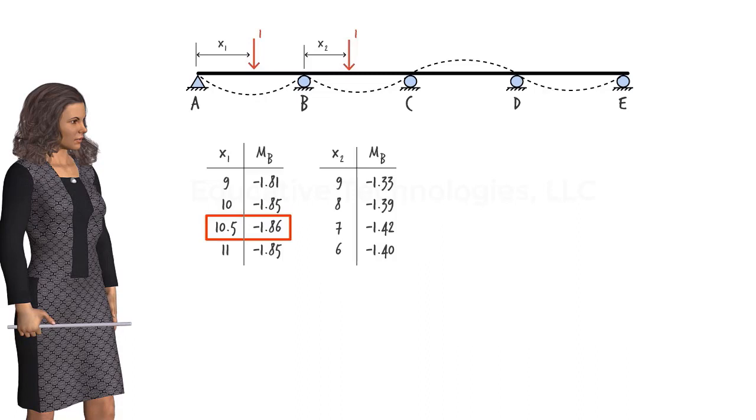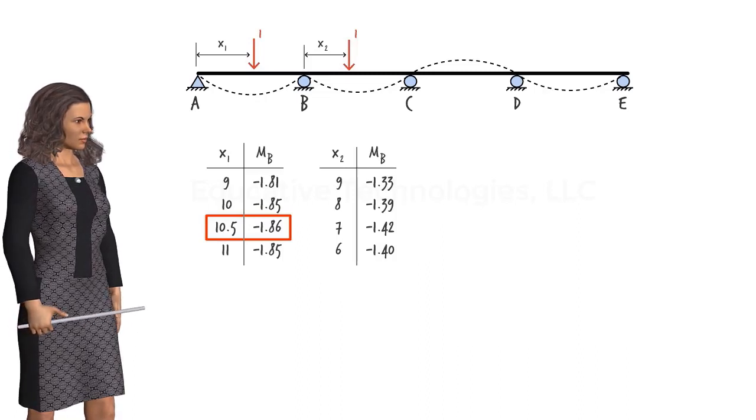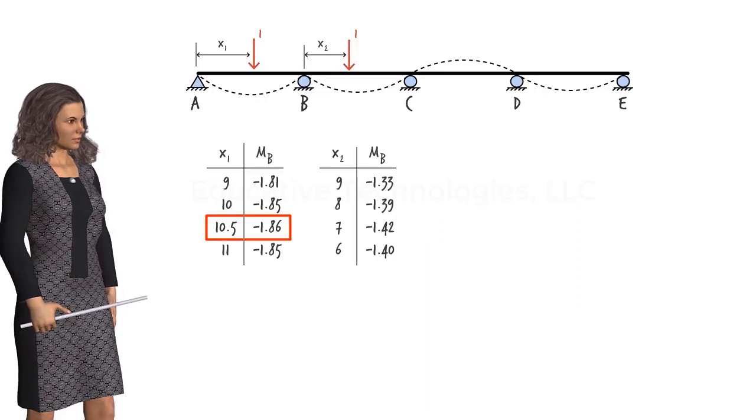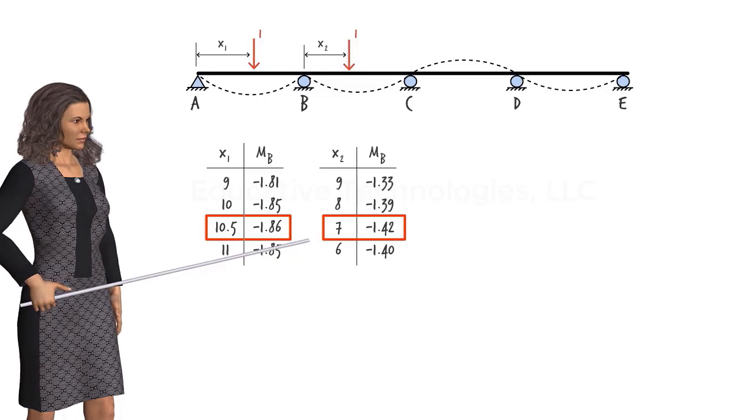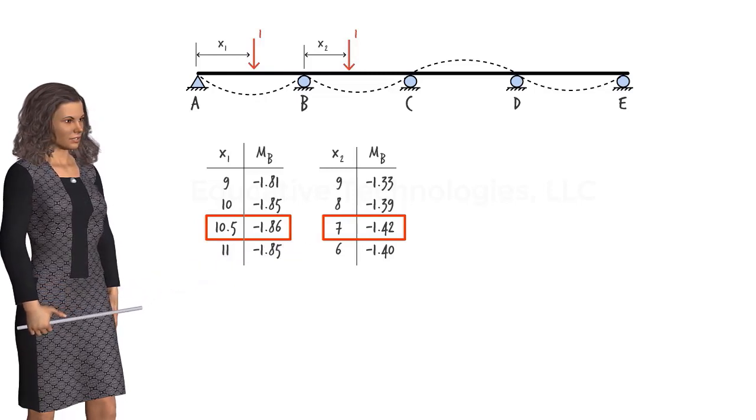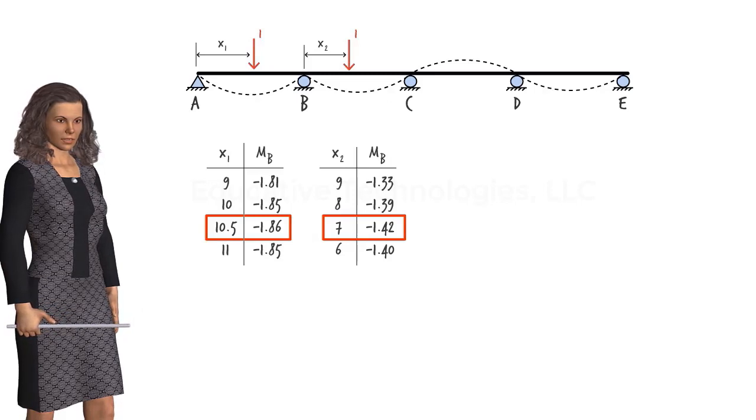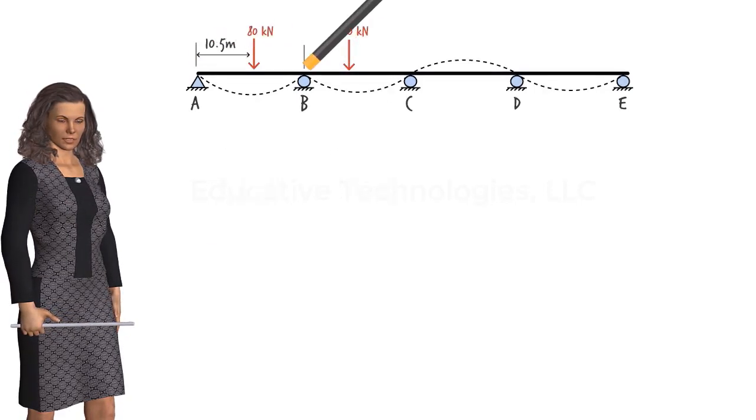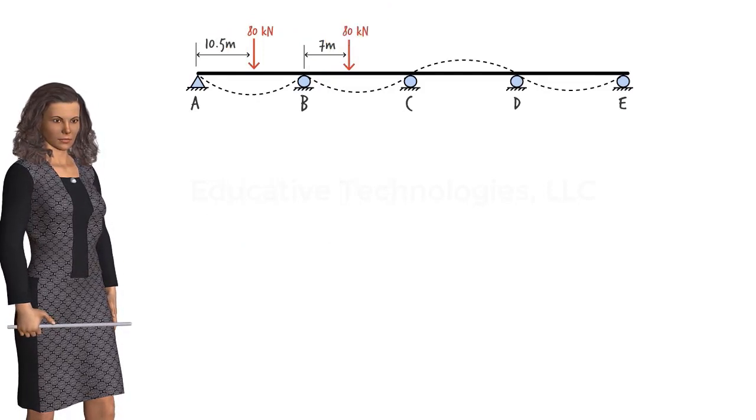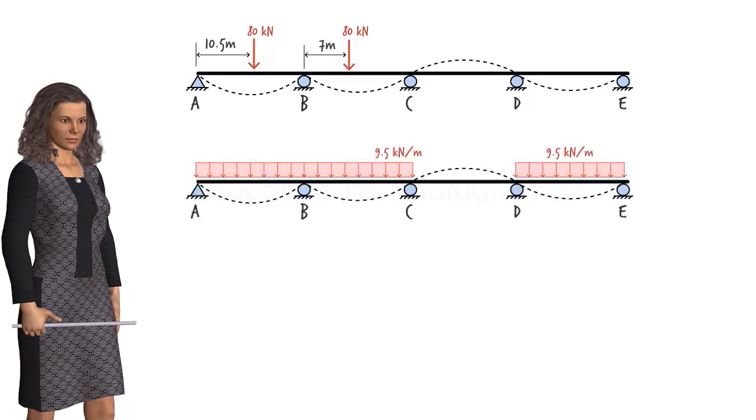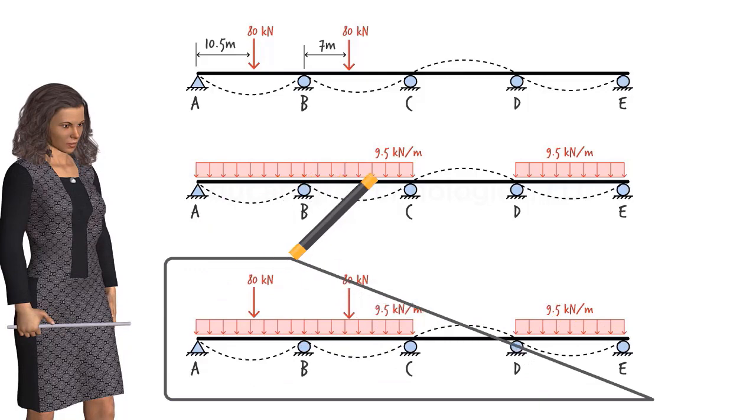The tabulated data suggests that the maximum negative moment at B occurs when x is between 6 and 8. Although we can continue the search in order to pinpoint the location of the maximum moment with a higher accuracy, for our illustrative purposes, I say this is close enough. So, let's take 7 as the position at which the influence line attains its peak value in segment BC. Now we know the positions of the two concentrated loads that need to be placed on the beam per AASHTO specifications. Combining this load pattern with the one for the distributed load, we get the critical load pattern for determining the maximum negative moment at B.